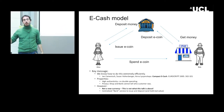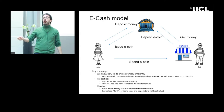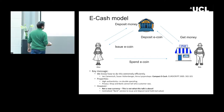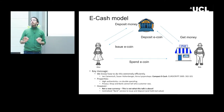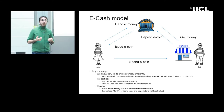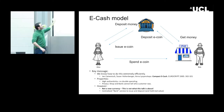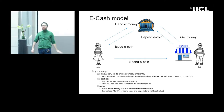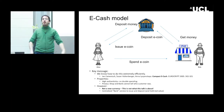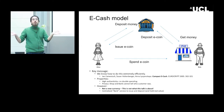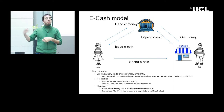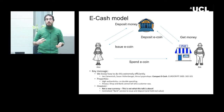This is related to selective disclosure credentials with double spending prevention. The state of the art is the compact eCash paper from EuroCrypt 2005 — high authenticity, no double spending, privacy. But this is not a currency. Everything is denominated in euros or dollars or whatever. It's just a way of saying these euros go to another account with some security properties electronically.